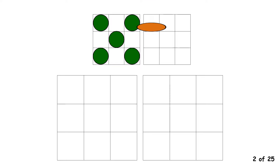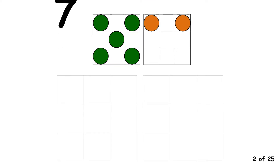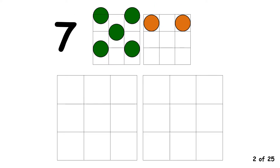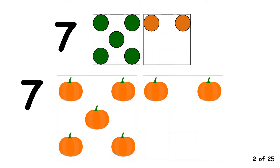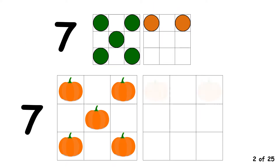5, 6, 7. 7 is made with 5 and 2. 7 is made with 5 and 2.